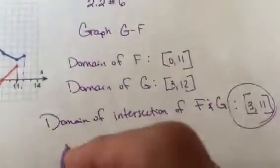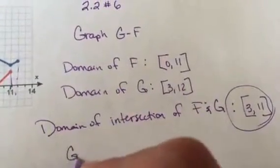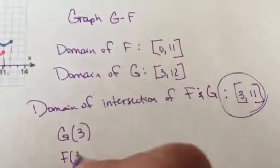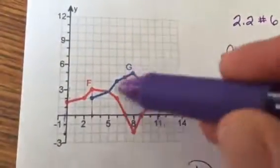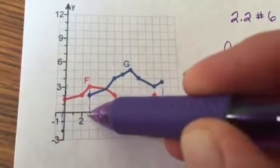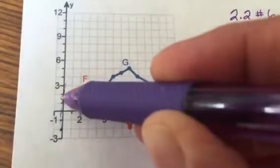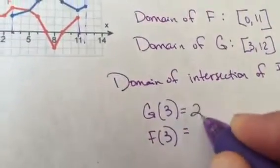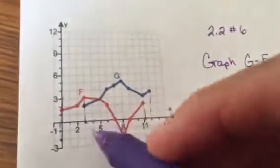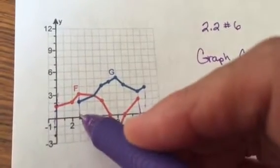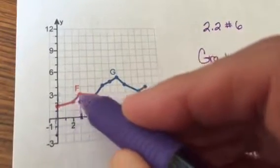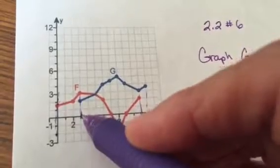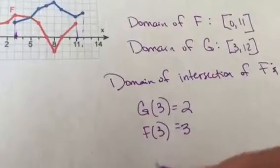So what I might first do is I'm going to find g of 3 and I'm going to find f of 3. So if I look at g of 3, g of 3 is the blue line. So go to 3 and notice when I plug in 3, out pops what, 2? So g of 3 is 2. f of 3 is the red line. So when I do that, it's way up here at 3. So when I plug in 3, right here out pops 3.